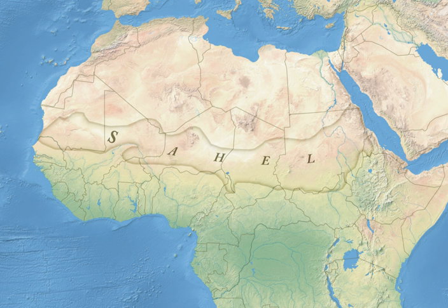The Sahel part of Africa includes parts of northern Senegal, southern Mauritania, central Mali, northern Burkina Faso, the extreme south of Algeria, Niger, the extreme north of Nigeria, central Chad, central and southern Sudan, the extreme north of South Sudan, Eritrea, Cameroon, Central African Republic, and the extreme north of Ethiopia. Historically, the western part of the Sahel was sometimes known as the Sudan region, roughly located between the Sahara and the coastal areas of West Africa.